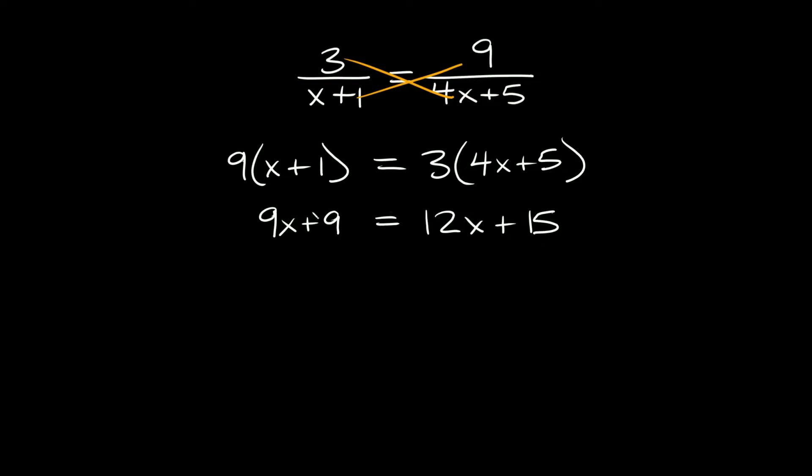Now we want to get all our x's on one side and the numbers on the other. Let's move the x's to the right, so we're going to subtract 9x from both sides, and let's get the numbers to the other side by subtracting 15 from both sides.